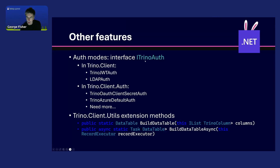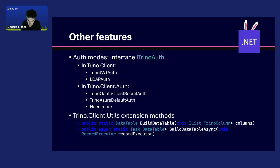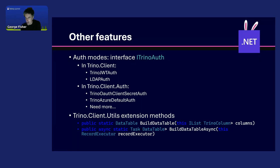A few other features: authentication. Coming with the main client, which requires no dependencies, we have JWT auth mode and LDAP auth. Then in the Trino client auth library, which has more dependencies, there's a standard auth client secret implementation and a Trino Azure default authentication. We need more auth modes — I'm just not familiar enough with all the other clouds to know exactly what is required, but having cloud-specific ones always makes it easier. There are also extension methods like BuildDataTableAsync, which allows you to use the record executor to get rows back into a DataTable, and you can also pass Trino columns to create a DataTable prototype based on the schema.